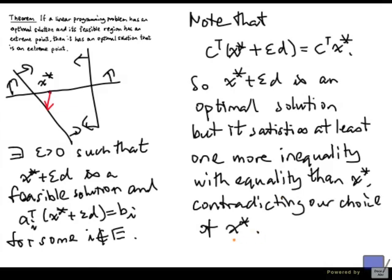So, what that means is, the second case, C transpose d equals 0, is not possible. And this means that the matrix A-bar that we have formed earlier cannot have rank less than n. And so it must have rank n, and so x-star must be an extreme point. And that completes the proof of the theorem.